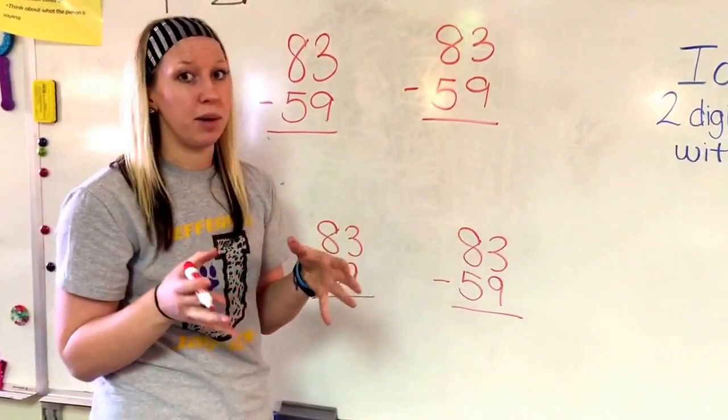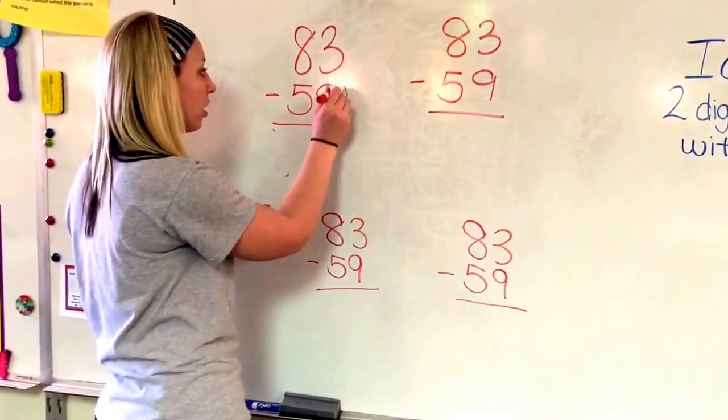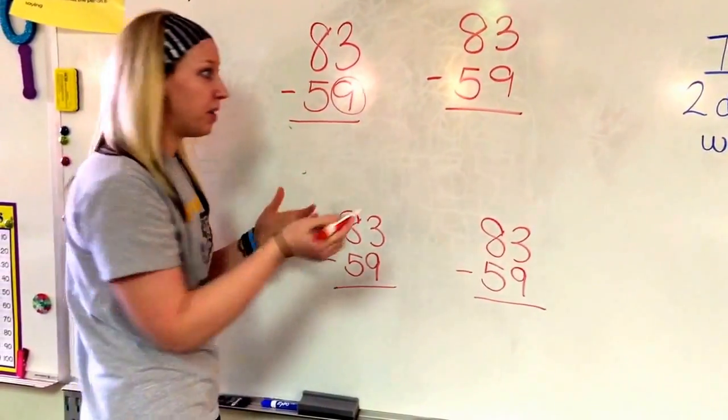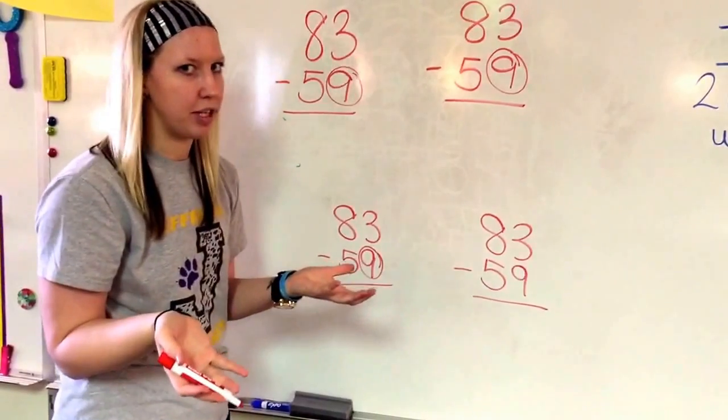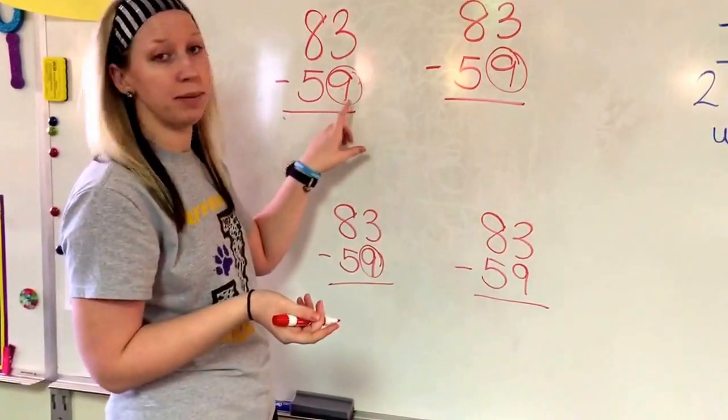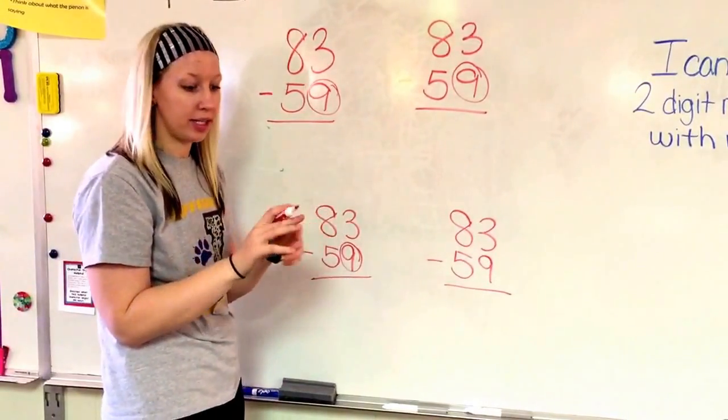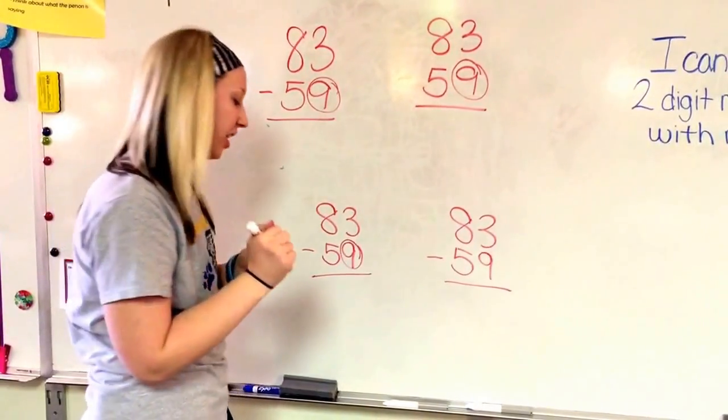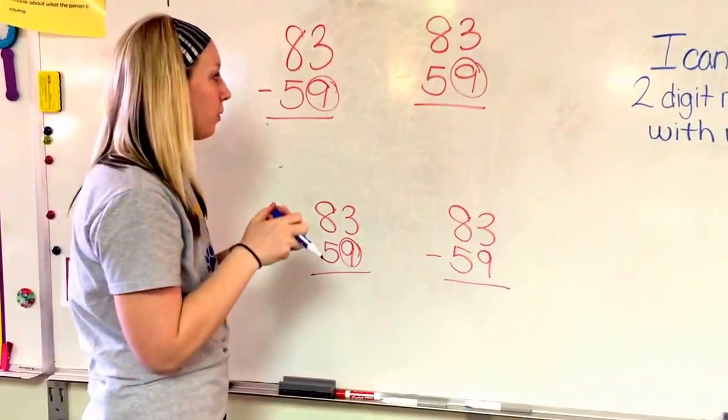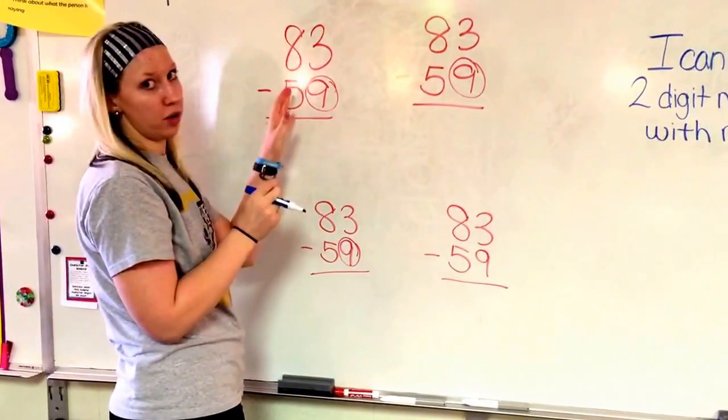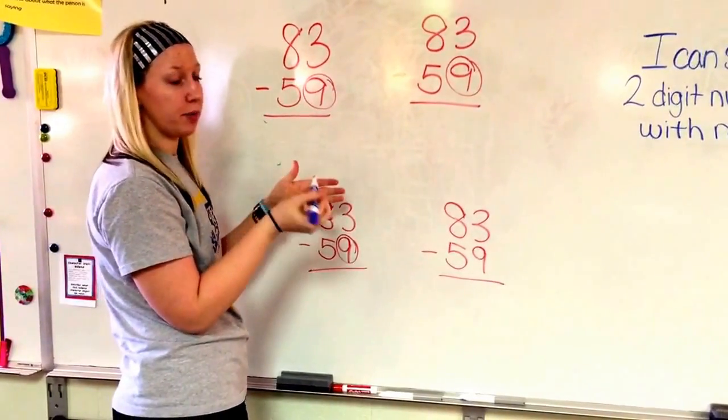So I always want to start with finding my bigger number. Where is there more of? Well, I know there's more on the floor. So I'm going to circle more on the floor. If you don't want to circle it, you don't have to. But circling it really helps me recognize, hey, there's more right here. Okay, so more on the floor, go next door. So I'm going to solve this in a different color so that you can see exactly what I'm doing. We know if there's more on the floor, we have to go next door and borrow a 10. So I'm going to show you a couple different ways you can do that.